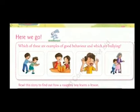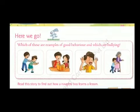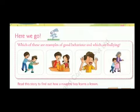Before we get into the understanding part of this story, let us quickly solve a small exercise given in our textbook. To help us understand good behavior and bad behavior, four pictures are given. Which of these are examples of good behavior and which are bullying? In the first picture, a boy is pushing another boy. Second, a boy and a girl are sharing a book. Third, a boy is teasing with his tongue out. Fourth, a small boy is helping an elderly person. The first and third pictures are of bad behavior; the second and fourth are of good behavior.